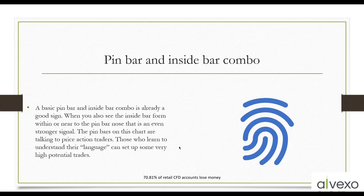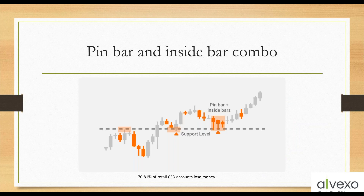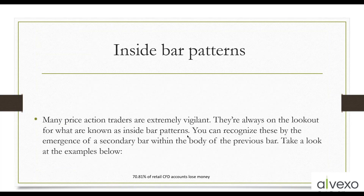Then we have pin bars, inside bars, and bar combos. Inside bars forming within or near a pin bar are a good sign, and pin bars on the chart are talking to price action traders. When you see pin bars developing at support and resistance levels, they're telling us something. A pin bar is just a candlestick, but in relationship to where the price is. Many price action traders are always on the lookout for inside bar patterns — you can recognize these by the emergence of a second bar within the body of the previous bar.